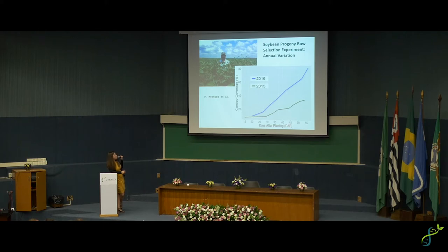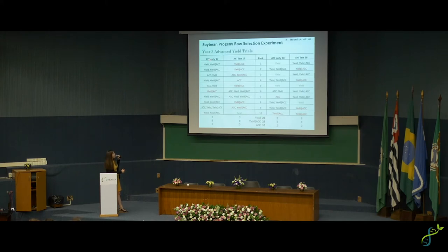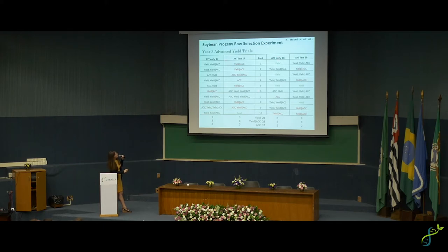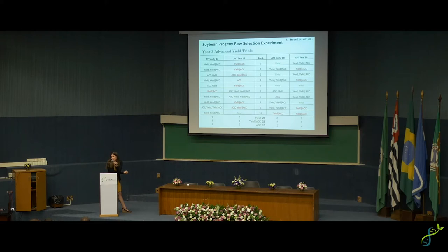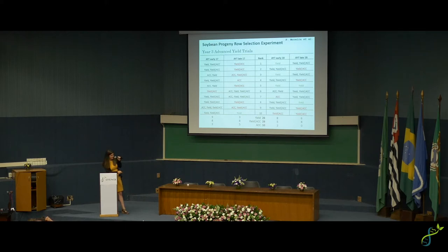What do we do about this strong environmental influence on our traits? One way, suggested by Jesse Poland, is to model what equals yield in your advanced yield trials — using high-quality yield data in a given season to find which longitudinal traits predict yield, then apply that model in progeny row selection. The disadvantage is that you'd still have to harvest everything in your progeny row. When you have a single row, you're really susceptible to gaps or poor emergence, and maybe canopy coverage data helps even out some of that variation.